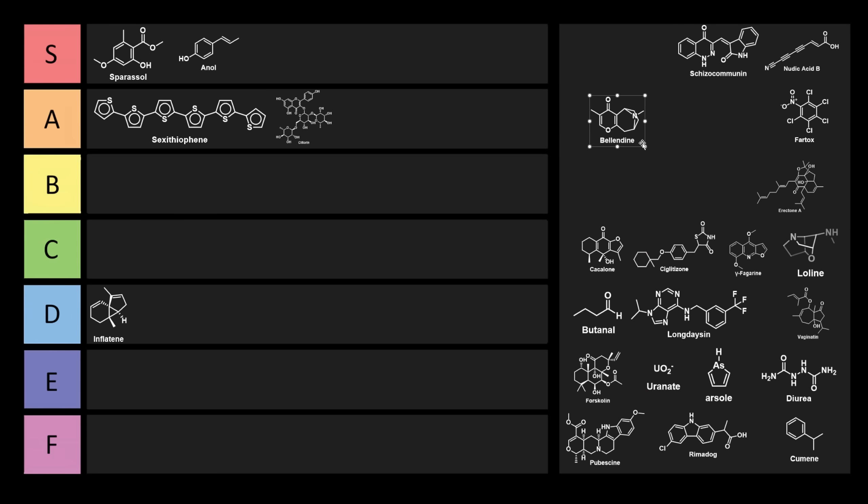So next, let's look at bellendine. If you're not sure what a bellend is, it's a popular term in the UK. Bellendine is found from the monotypic shrub Bellenda Montana. So I guess in Montana, they have this special type of bellenda species.